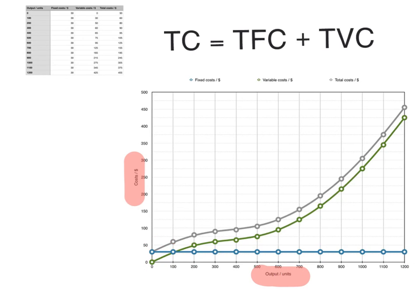Variable cost is that green curve in the diagram. As you can see, at first it increases at a decreasing rate, and then it starts to increase again at an increasing rate. The total cost curve begins from the same point as the fixed cost curve, because when output is zero, variable costs are zero, so total cost is just fixed cost. It is this grey curve that is parallel to the variable cost curve — it also increases at first at a decreasing rate, and then increases at an increasing rate.